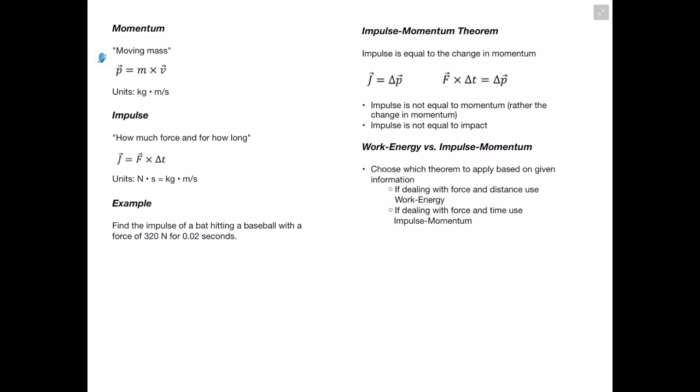Next we're going to be talking about momentum, which is basically moving mass. Momentum, or p, is going to be equal to our mass times our velocity, giving us units of kilogram meters per second. When dealing with impulse, we want to know how much force we applied and for how long. Impulse is denoted as j and equals force times change in time, giving us units of newton seconds. Even though kilogram meters per second and newton seconds are technically equivalent, we only want to use newton seconds when dealing with impulse, not momentum.